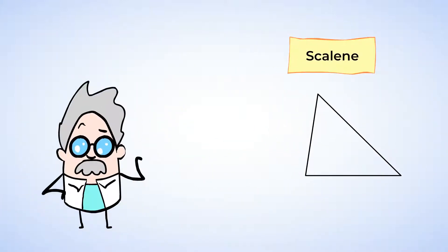Take a look at this triangle. It has side lengths of 2 cm, 3 cm, and 5 cm. Since all sides are different lengths, it's called a scalene triangle.